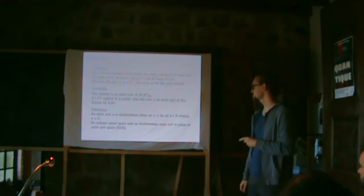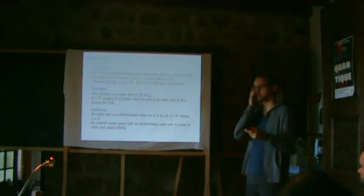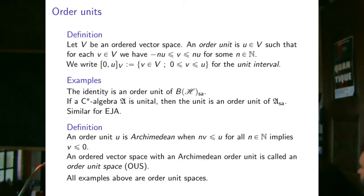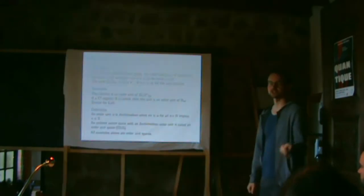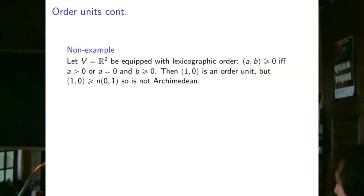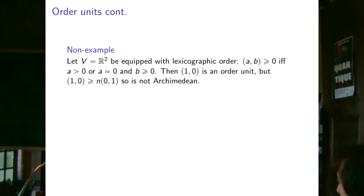Order unit spaces are relevant for the operational approach to quantum theory. All examples so far — self-adjoint operators, C*-algebras, Jordan algebras — are order unit spaces. A counterexample: the two-dimensional real vector space with lexicographic order has (1,0) as an order unit, but n·(0,1) ≤ (1,0) for every n, so it's not Archimedean and hence not an order unit space.